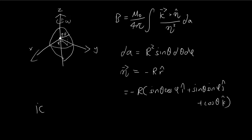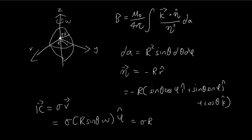Now let's find K. By definition, K equals the surface charge density σ times the velocity of the point charges. The velocity at a given point is r sin θ times the angular velocity ω, directed in the φ-direction. The φ-direction in Cartesian coordinates is −sin φ î + cos φ ĵ, which can be proved via a derivative. So we've now found all three components: dA, eta, and K.